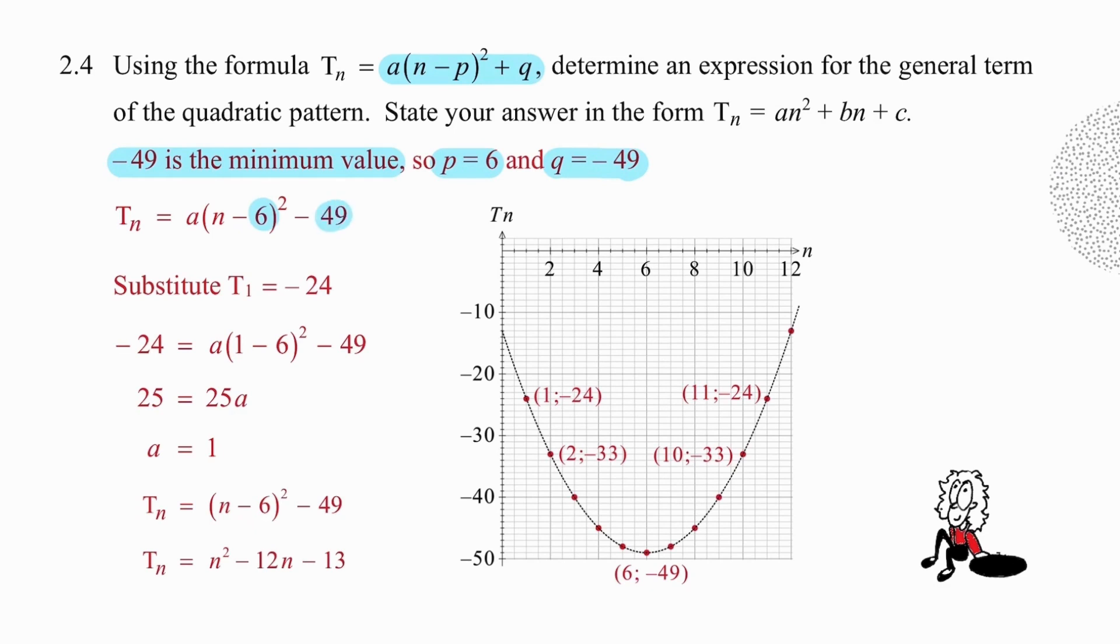So the p value we are looking for is 6 and the q value is minus 49. We substitute the 6 and minus 49 into the formula. And now we need to find the value of a by finding something else to substitute. I'm choosing to substitute t1 knowing that the result is negative 24. That enables us to work out that a is equal to 1, which means we have a formula, but not yet in the correct format. If we simplify that answer out, we get tn equal to n squared minus 12n minus 13. The most unexpected way to work out the formula for a quadratic pattern.